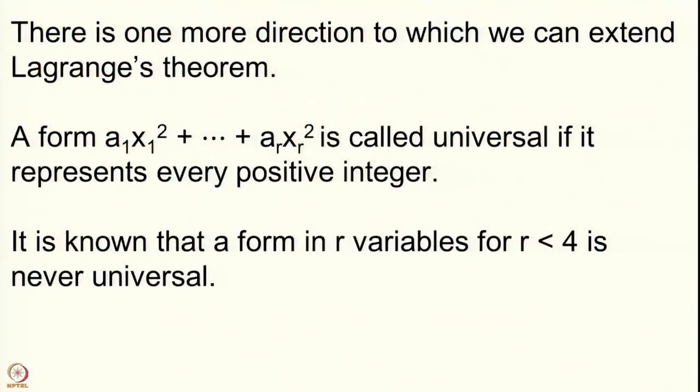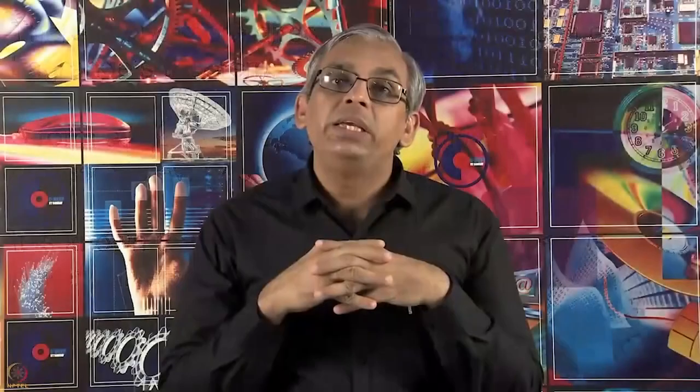There are some basic constraints. For instance, if all the aᵢ's were bigger than 1, there is no way to write 1 as represented by the form. So if we order a₁ ≤ a₂ ≤ a₃ ≤ ..., then a₁ must equal 1, and a₂ must be at most 2, otherwise 2 cannot be represented. These natural constraints mean that for any fixed r, there are only finitely many such forms. It is also known that for r less than 4, no such form can ever be universal — you need at least 4 variables.